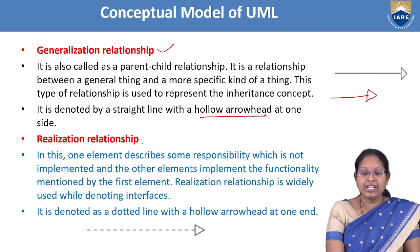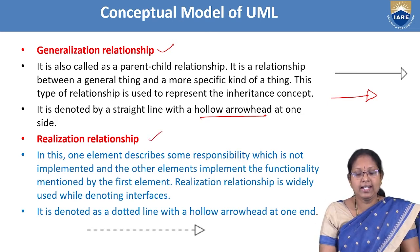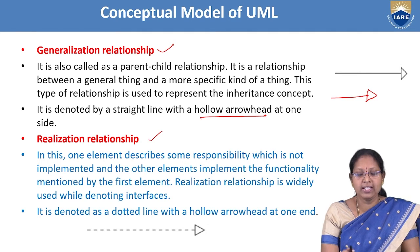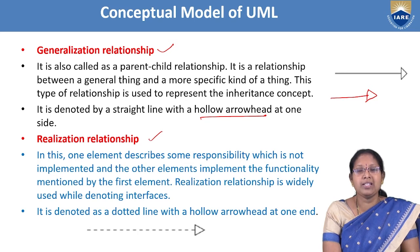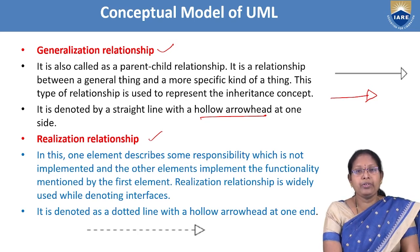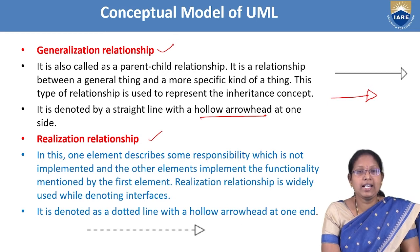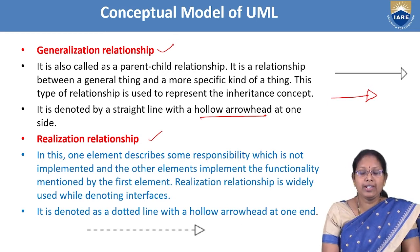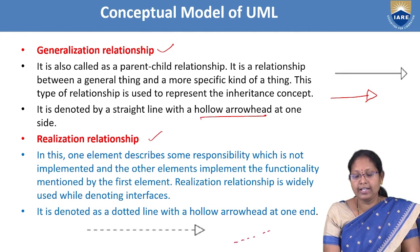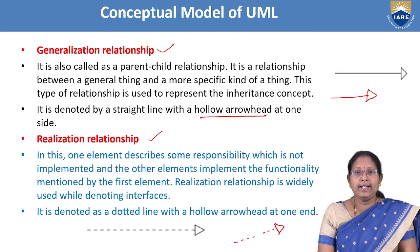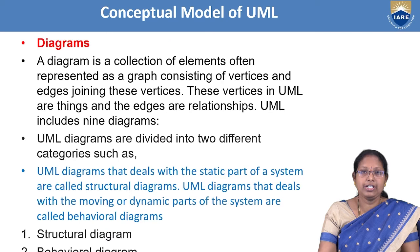The fourth is realization relationship, which combines properties of both generalization and dependency. It is denoted by a dotted line with an arrow head.